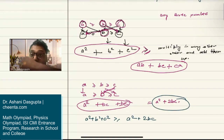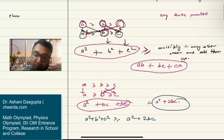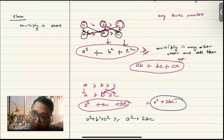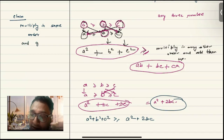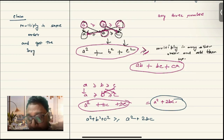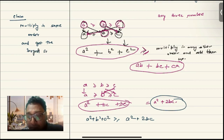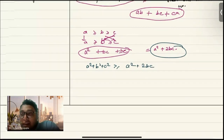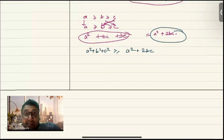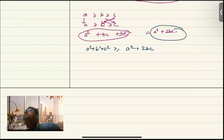So what the rearrangement inequality claims is this: multiply in the same order and you get the largest sum. The reason I write it this way is that the proof is really quite simple and quite intuitive.